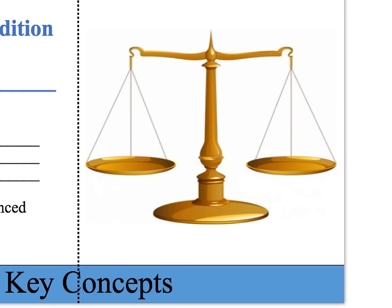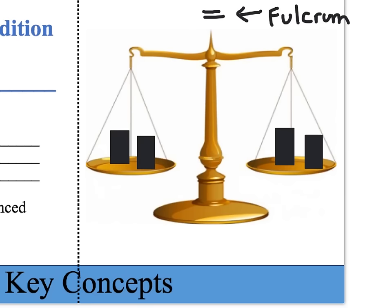Speaking of balancing, let's take a look at this scale. I want you to think of the center of this scale as the equal sign — we also call this the fulcrum. To make sure our scale is balanced, we have to make sure that equal amounts of objects are on both sides. Right now, this scale is balanced because both sides each have two blocks.